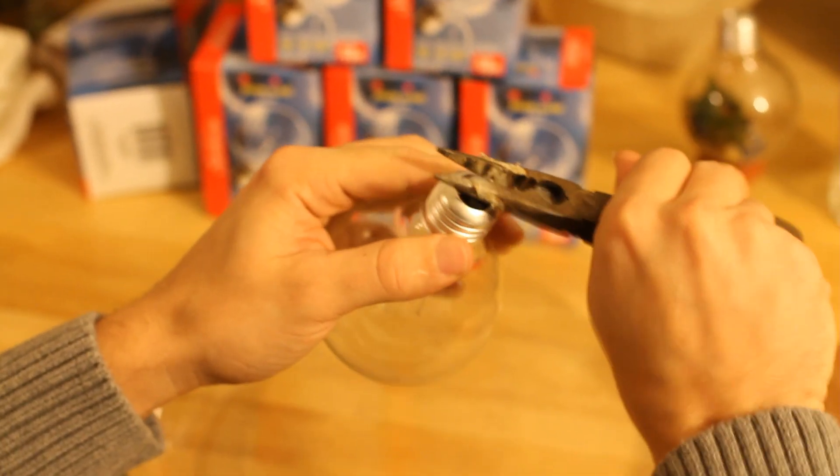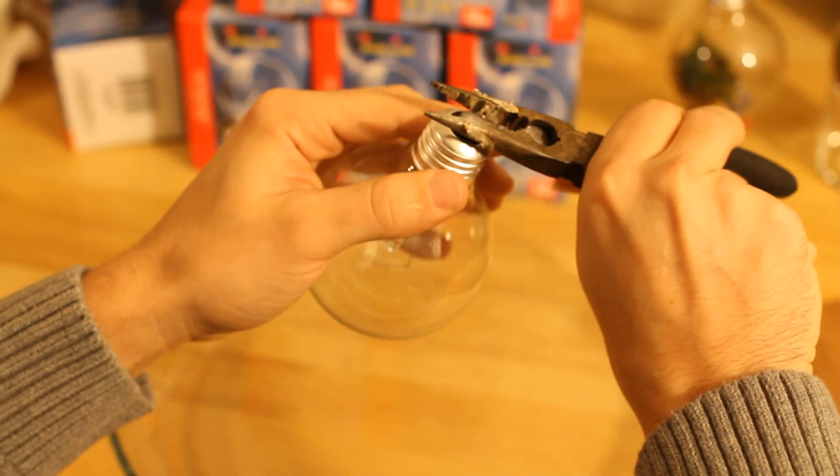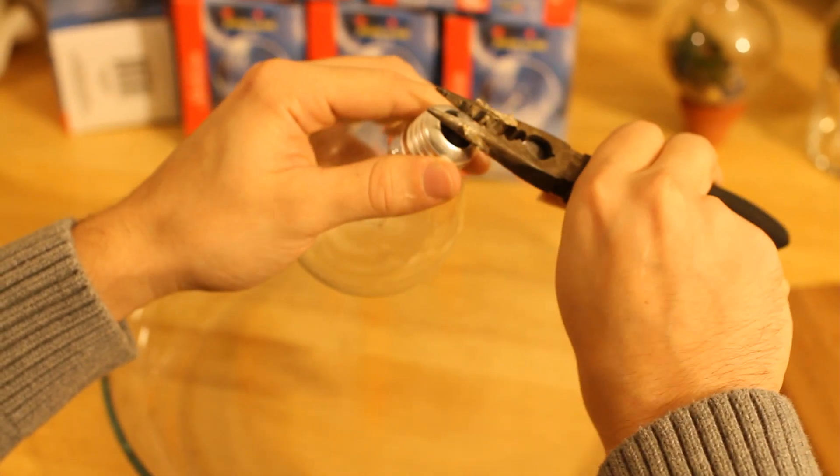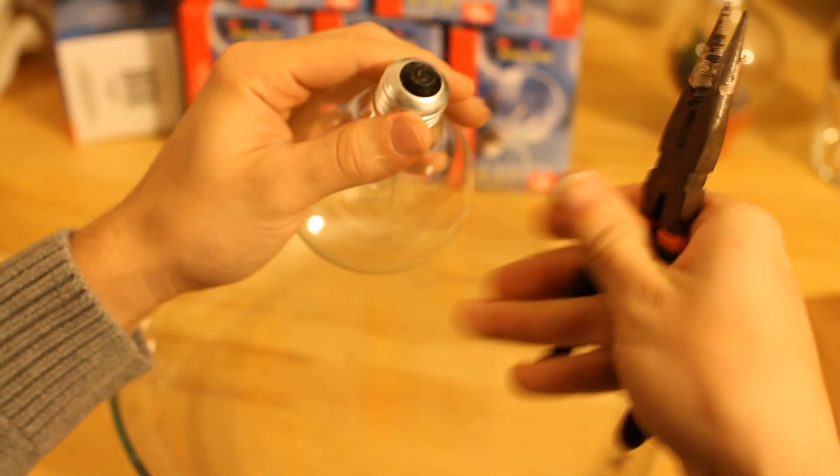You've got to kind of work it in there. You don't want to get your fingers caught in there. There we go. You see it's coming off there. It's about to go. And then you pull it off just like that. Needle nose pliers.